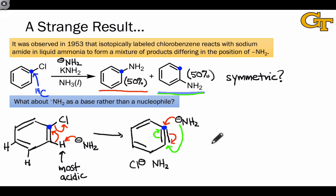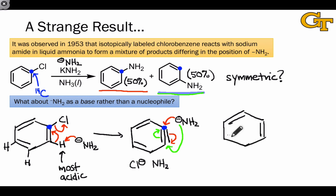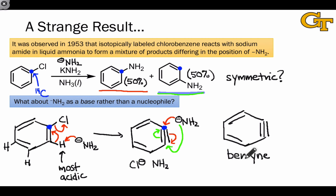That's all well and good — this mechanism explains the observed outcome. But let's hit pause and really take a close look at this intermediate that we're proposing. What's remarkable about this is not so much that it's aromatic, but that there's a triple bond now within a six-membered ring. Because of the presence of the triple bond, the name of this intermediate ends in 'yne', and because it's part of an aromatic ring, we refer to this as a benzyne or aryne intermediate.